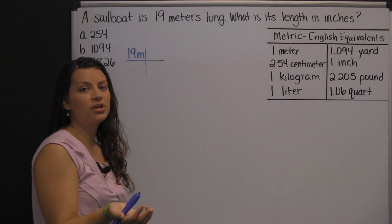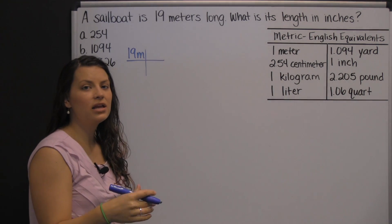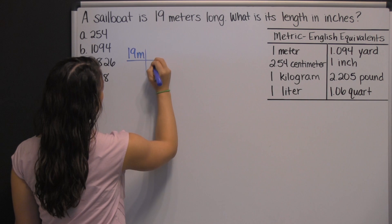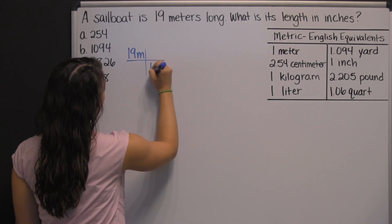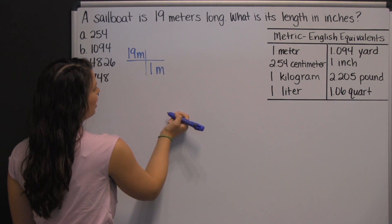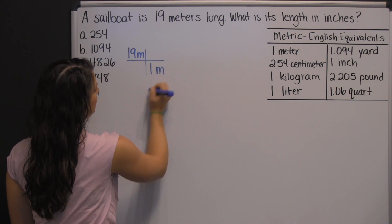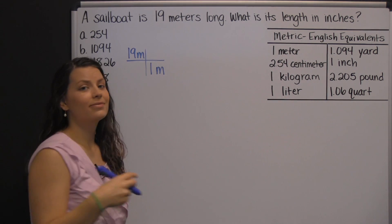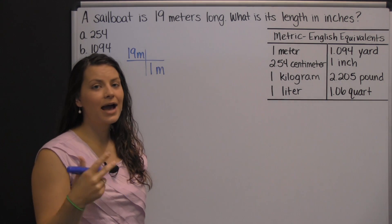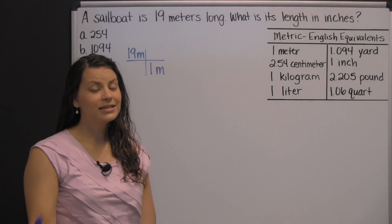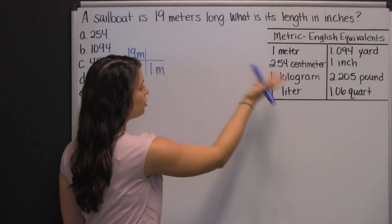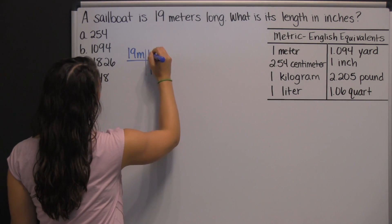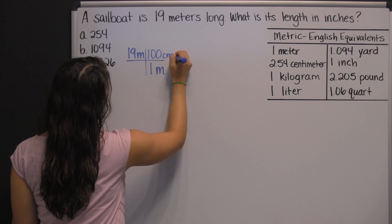So to convert the meters, I need the meters unit to go away. To make the meters unit go away, put it in your denominator — that way the meters cross cancel. One meter is how many centimeters? This one you have to know; it's not in your chart. One meter is one hundred centimeters.